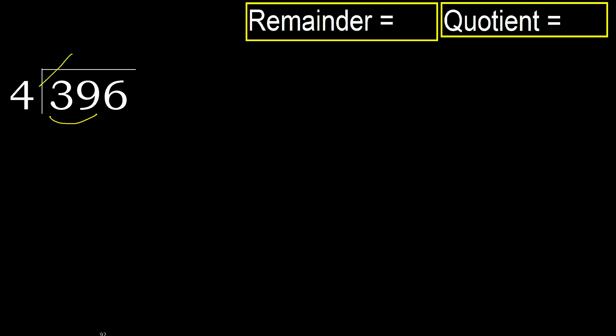4 multiplied by which number is nearest to 39, but not greater? 4 multiplied by 9 is 36. Ok.